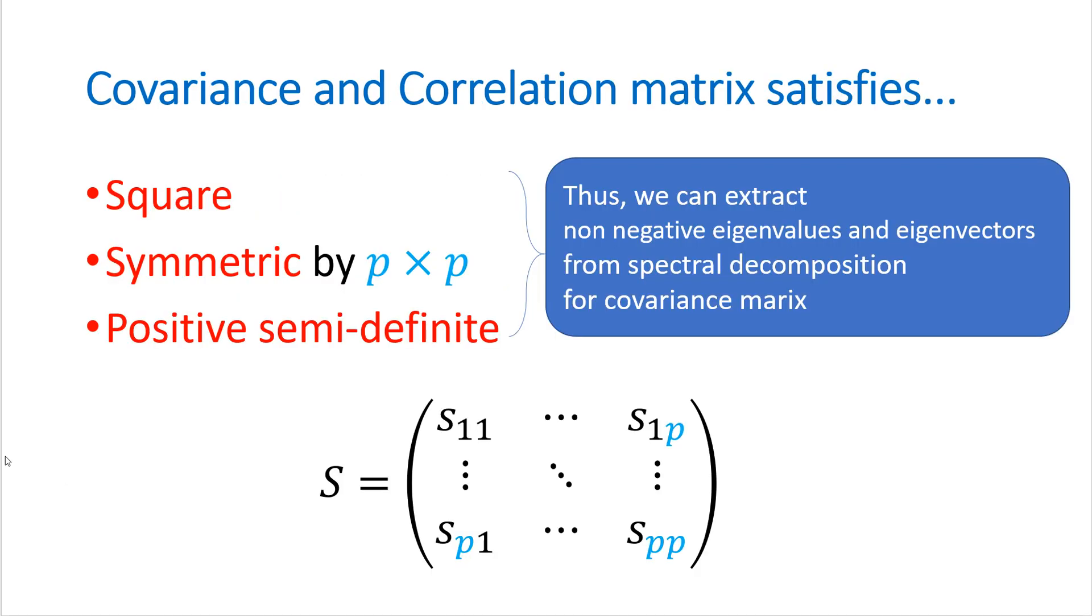As I mentioned in statistical analysis, covariance and correlation matrix satisfies square type and symmetry and also positive semidefinite. So again, this is the typical covariance or correlation matrix form.